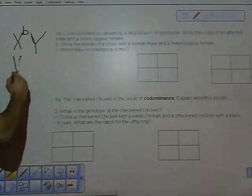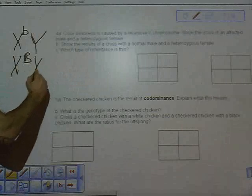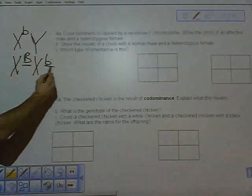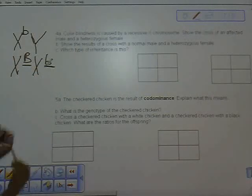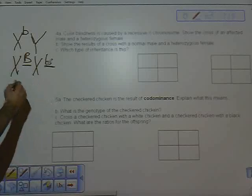A heterozygous female: just like in Mendelian genetics we would have big B little b. However, now since it's a sex-linked trait, we have to show the sex chromosomes, two Xs, since it's a female.